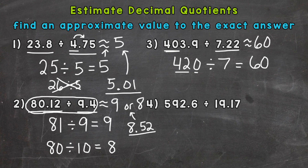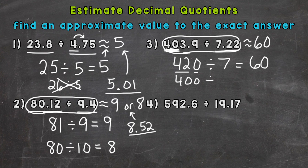The other strategy is to look at the problem as a whole and find two compatible numbers. I could think of 403.9 as close to 400 and 7.22 as close to 8, because 40 and 8 are compatible. So 40 divided by 8 equals 5 — place the zero back on the end to push the 5 to the correct place value — giving an estimate of 50.